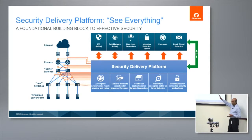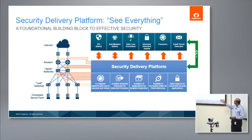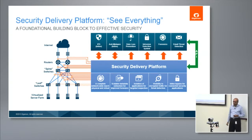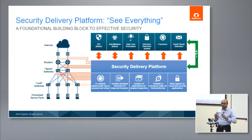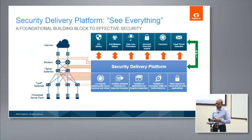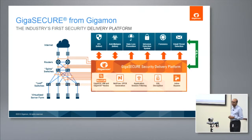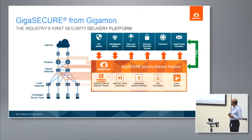Those are the five pillars — and the sixth one is how do you manage and orchestrate all of this, which happens through an orchestration manager with the ability to use APIs. The security delivery platform is actually a market category by itself. Gigamon's implementation of the security delivery platform is what we call GigaSECURE.